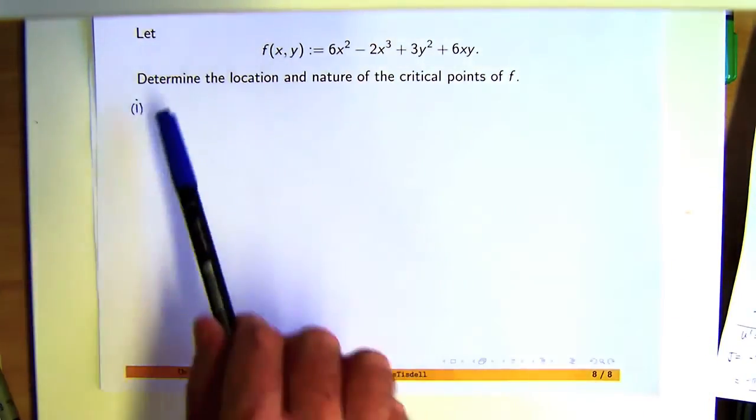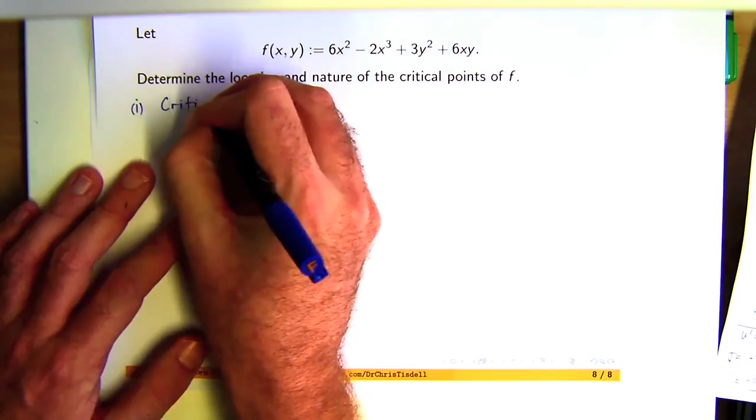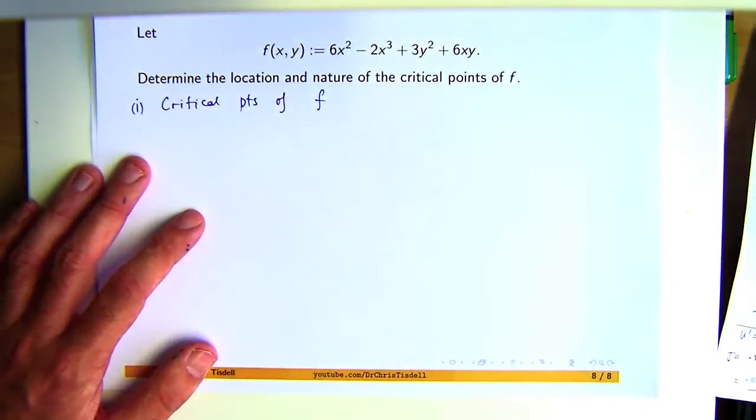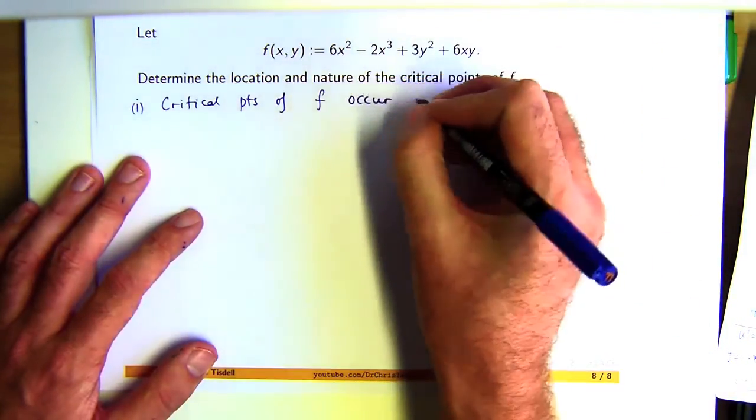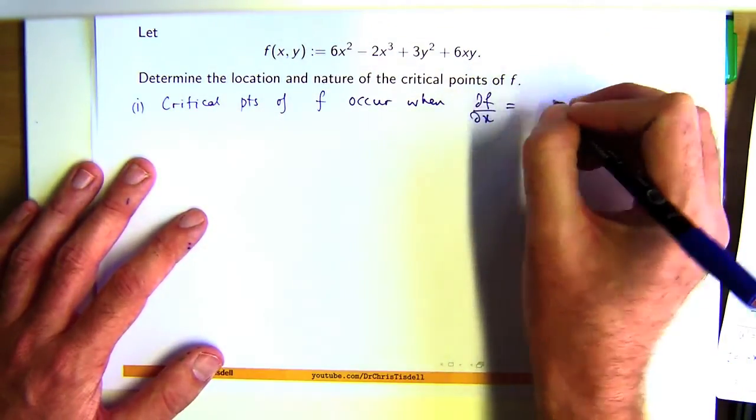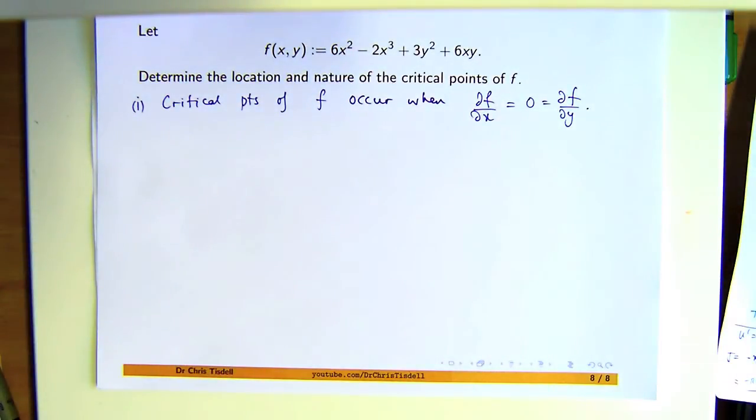The first part of this problem is to determine where the critical points lie. So let's remind ourselves that the critical points of f occur when the two partial derivatives of f equal zero. Now, f's a polynomial, so it's very well-behaved and nice and smooth, so we don't have to worry about any strange behavior. So there's two equations there. We want to solve them. Let's calculate these partials and we will solve.